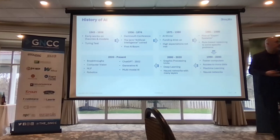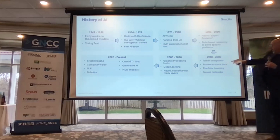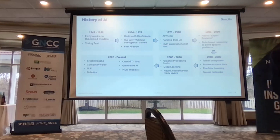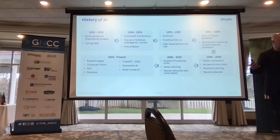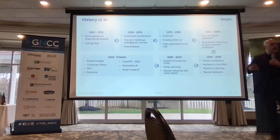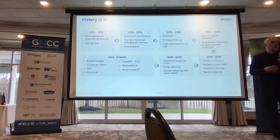Then money started following specific narrow use cases called expert systems — very focused systems that solve certain problems using data — and there was a resurgence because companies could monetize it. Enter the 90s and all of a sudden the hardware, the chips, the semiconductor industry started improving processing power rapidly. The processing power caught up to the algorithms, and people like Geoffrey Hinton jumped back into the fray. What used to take a year of theoretical processing could now be done in days or weeks.